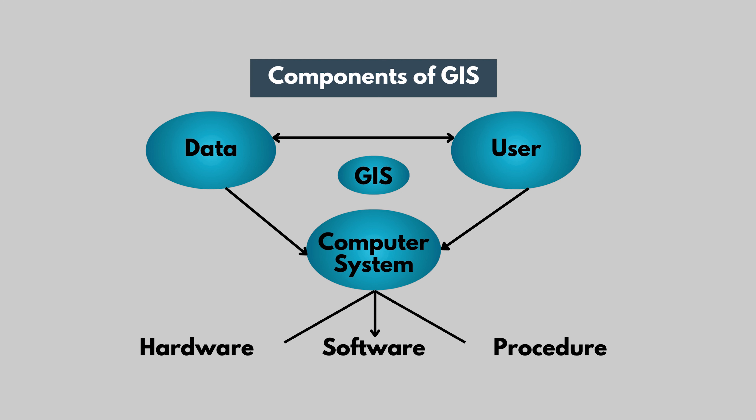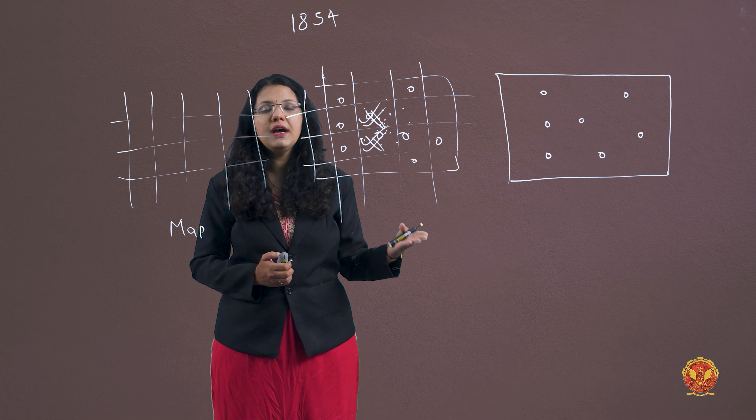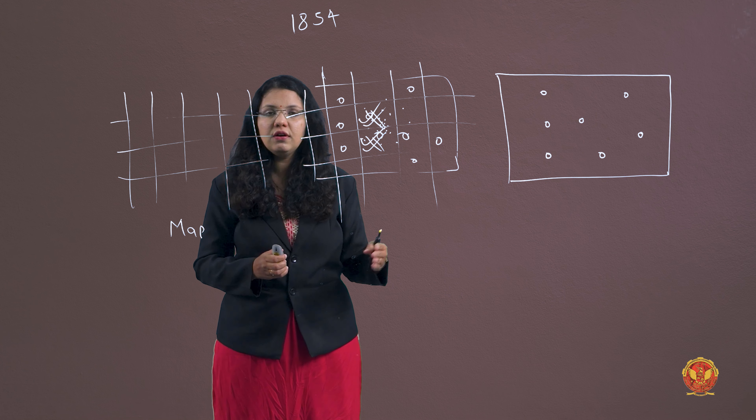Hardware refers to physical components we can touch. Software refers to programming — what we use to manage things and get desired data outputs. Procedure means following a standard form. We need to follow the procedure, which we will watch in the next video covering the components in more detail. Thank you.